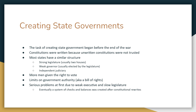Most states are going to have a very similar structure. There's going to be a strong legislature, usually with two houses. There's going to be a weak governor, typically elected by the legislature and not by the people. And then there's going to be an independent judiciary. More people are given the right to vote, and the property qualifications are lowered. There are going to be limits on government authority similar to the Bill of Rights — freedom of the press, freedom of speech, freedom of religion, the right to a fair trial, the right to protection against searches, and the consent to taxation.